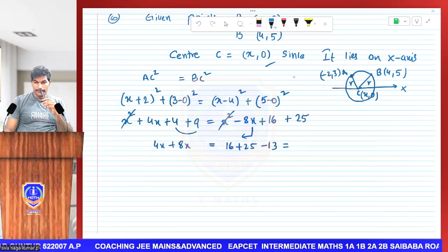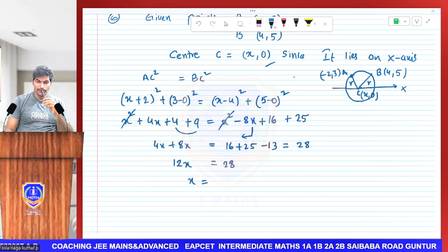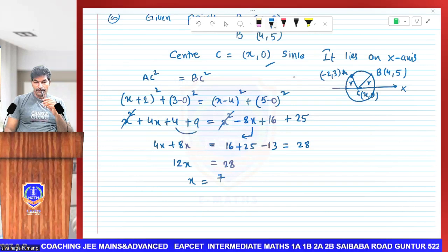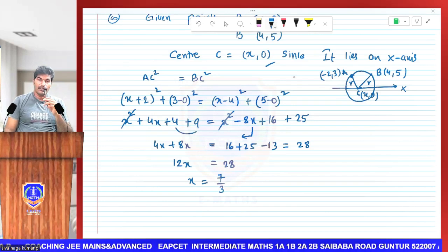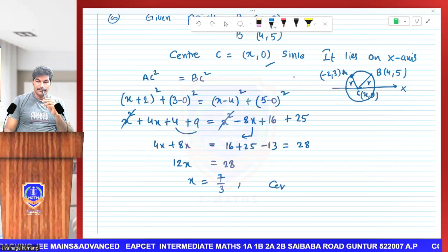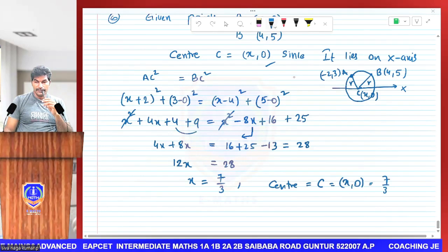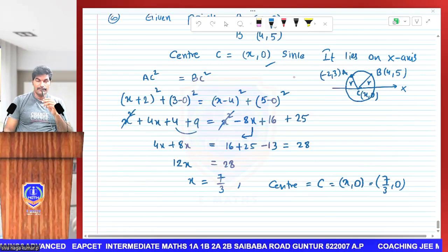This is 12 and this is 28. So 12x = 28, x = 7/3. Therefore center C, x comma 0, is (7/3, 0).